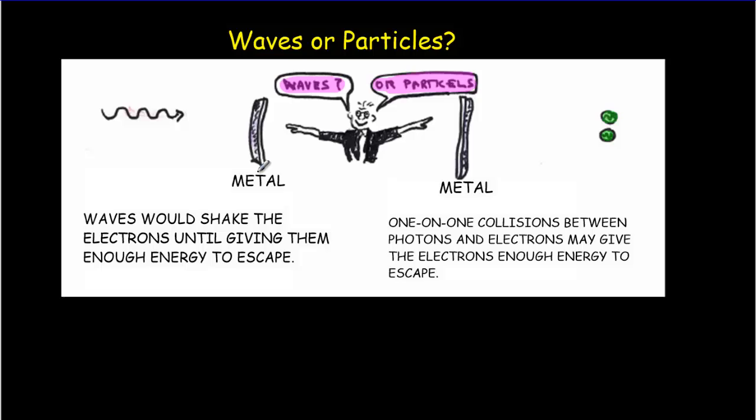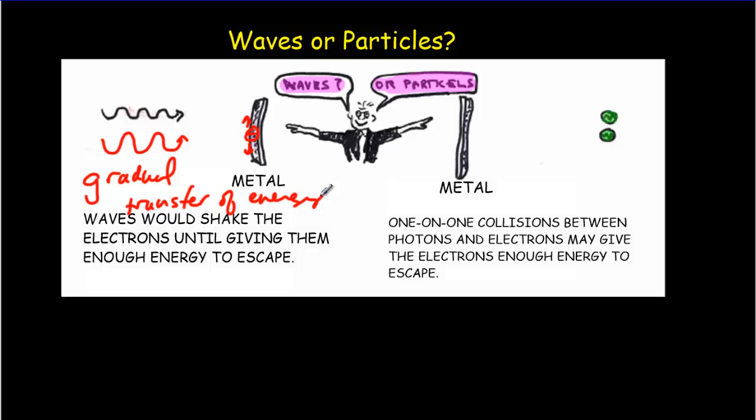Let's look at what the wave model would predict compared to what the particle or photon model would predict. If you've got waves coming in, they're electromagnetic waves, meaning they're oscillations of electric and magnetic fields. What that's going to do to charges such as electrons in the metal is make them shake around. So there's going to be a gradual transfer of energy, and the electrons should get shaking more and more until eventually they'll overcome the bonding to the metal itself and be emitted.